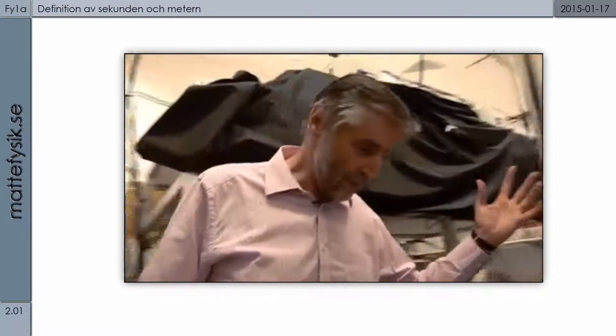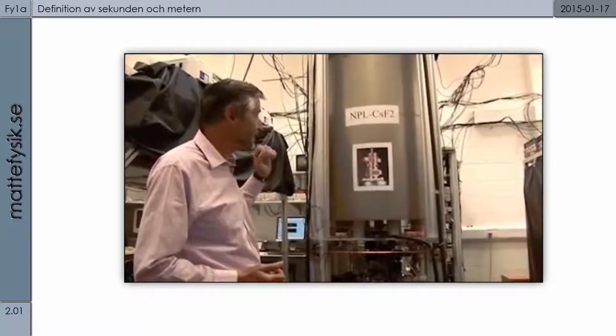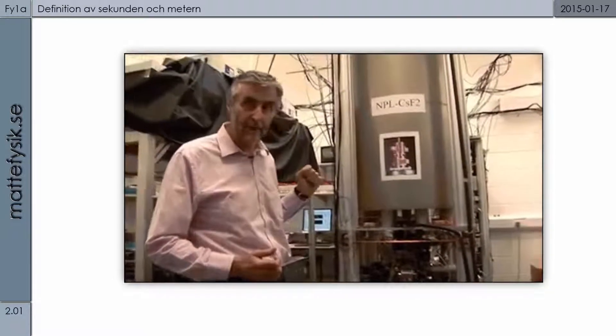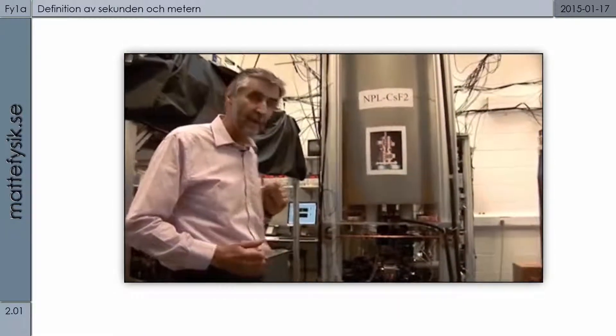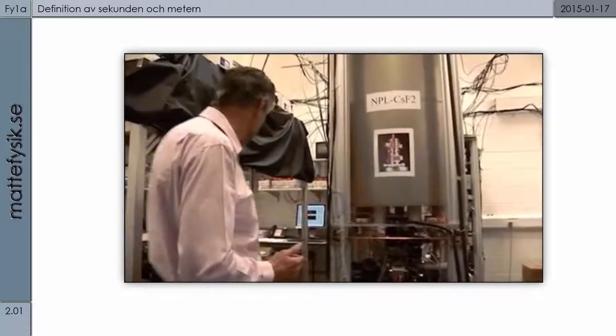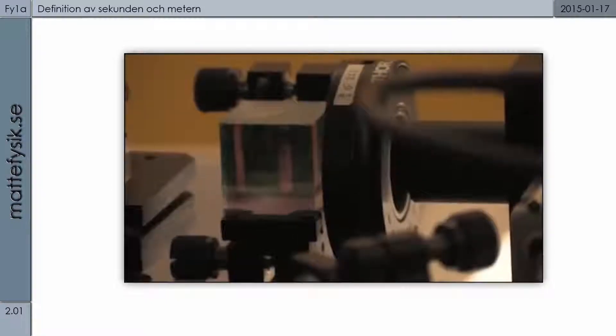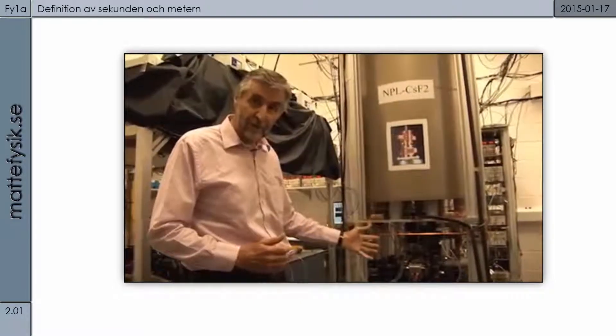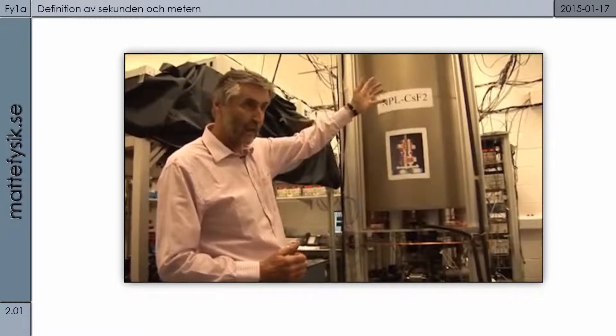But here, we have the most accurate caesium clock that's available in the UK. Okay, this is the caesium fountain, and there are similar caesium fountains in other standards laboratories around the world. In this arrangement, what we do is cool the caesium atoms to temperatures very close to absolute zero using laser systems. So we create a cloud of very cold atoms trapped in this volume down here, and then we launch these cold atoms up through the apparatus, and they fall back down under gravity.